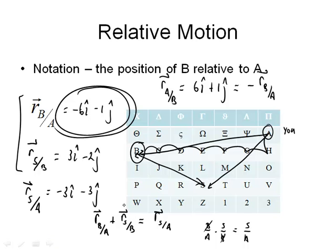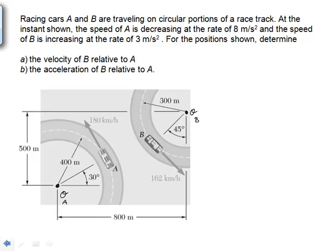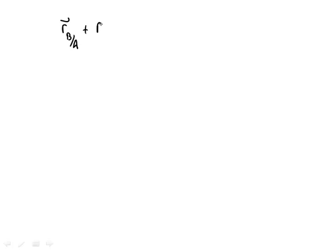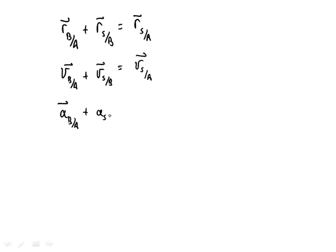So the position of B with respect to A plus the position of S with respect to B equals the position of S with respect to A. Taking the derivative of both sides, the velocity of B with respect to A plus the velocity of S with respect to B equals the velocity of S with respect to A. Taking another time derivative gives the same relationship for accelerations. All of these work with our subscript rule — whether it's position, velocity, or acceleration, the subscripts are the same: B/A plus S/B, the B's cancel, leaving S/A.